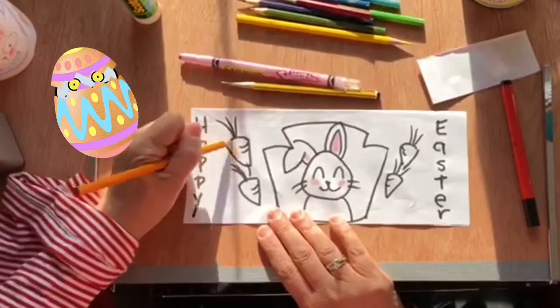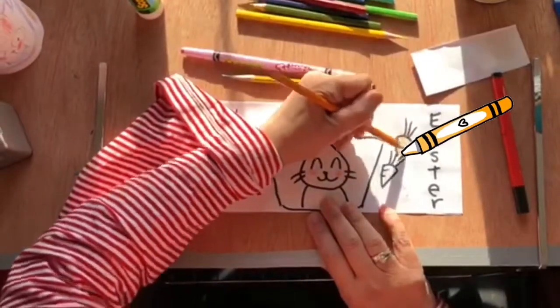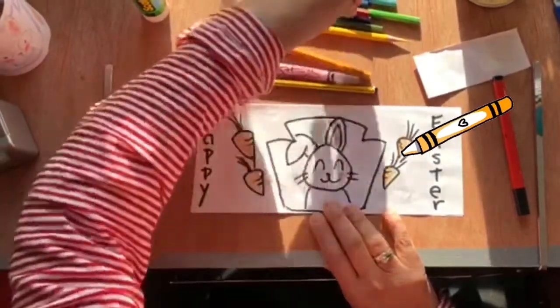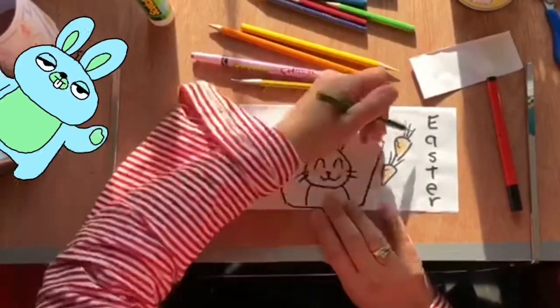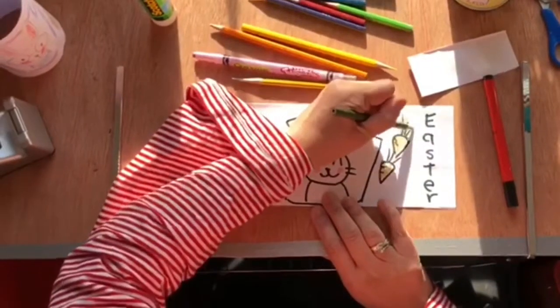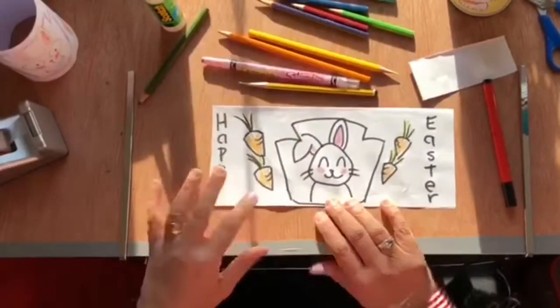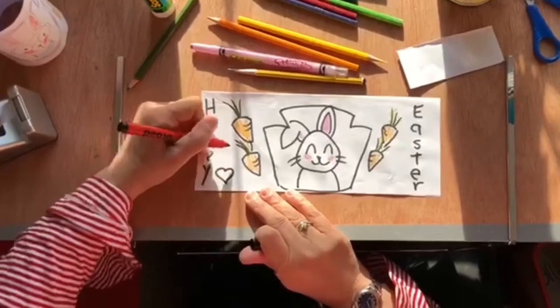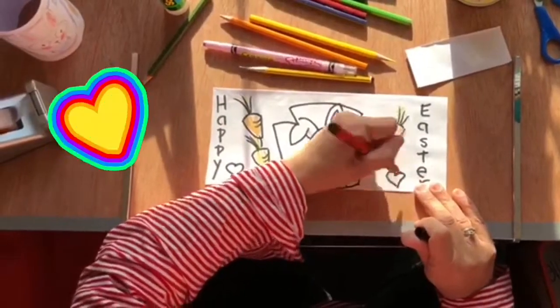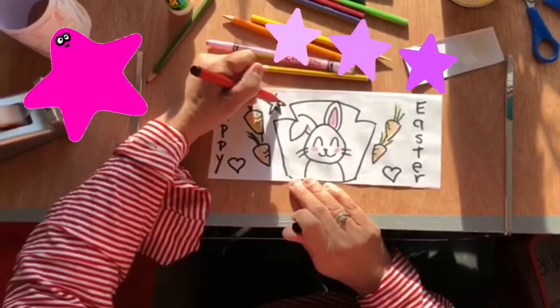So we have carrots to color. We have this green beet to color. And maybe you could add some extra bits like hearts. I love hearts. Maybe some stars. That would make it look super cool.